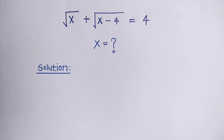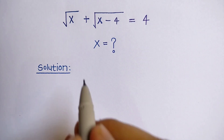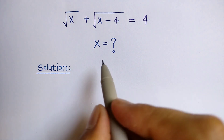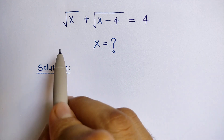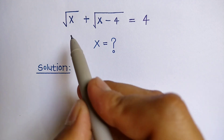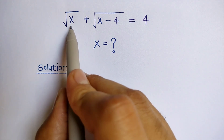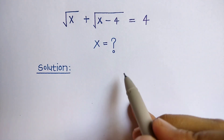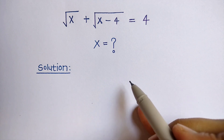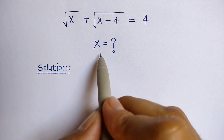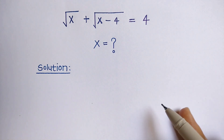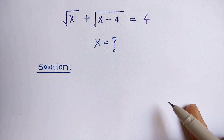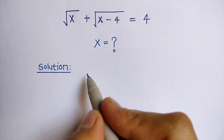Hello everyone, welcome to my YouTube channel. Today we solve this nice square root problem: root x plus root x minus 4 is equal to 4. Here we have to find the value of x. Now we are trying to solve this question.